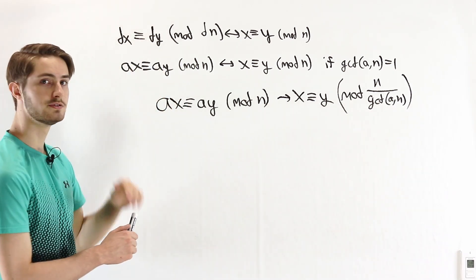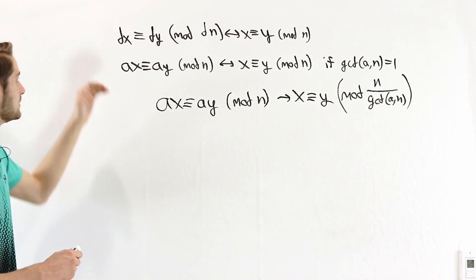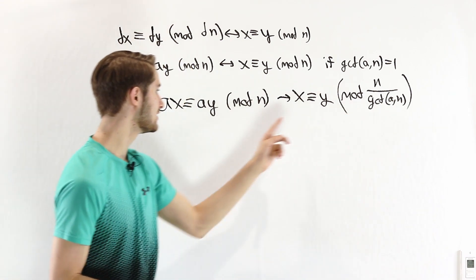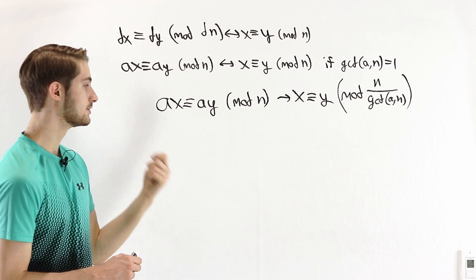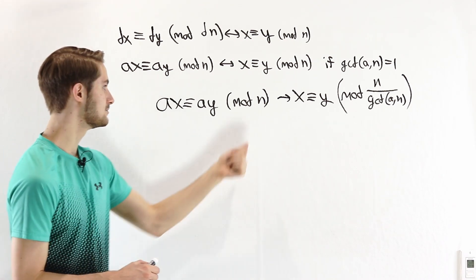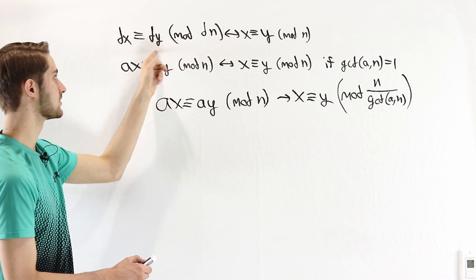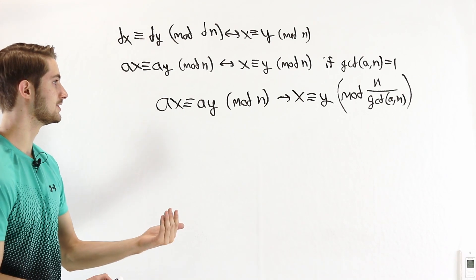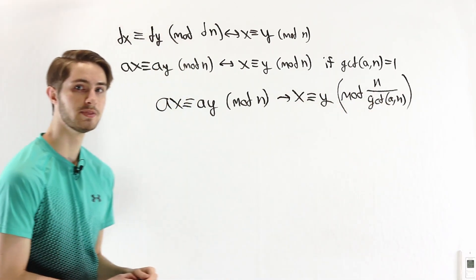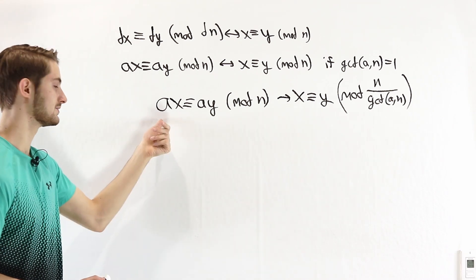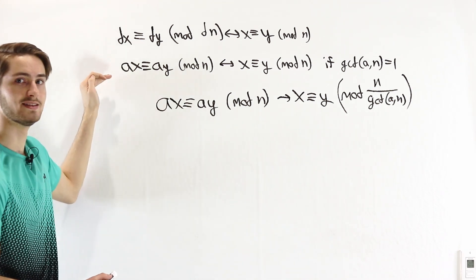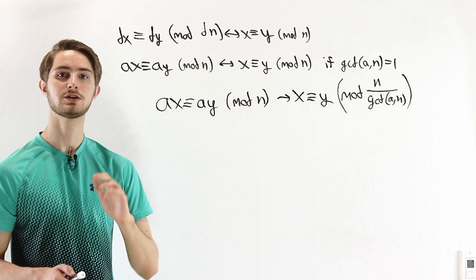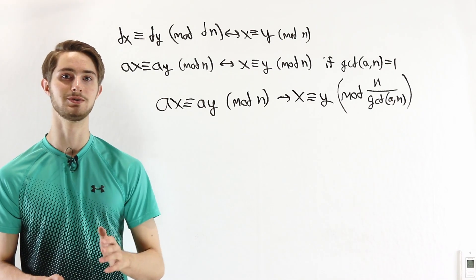The proof applies two steps. First, we take the greatest common divisor of a and n — since it must be a factor of n, we cancel it out using the second rule, which changes the modulus. Then, n/gcd(a,n) is relatively prime to whatever remains of a, so we apply the first cancellation rule to get x ≡ y. That's how we cancel shared factors in modular arithmetic.